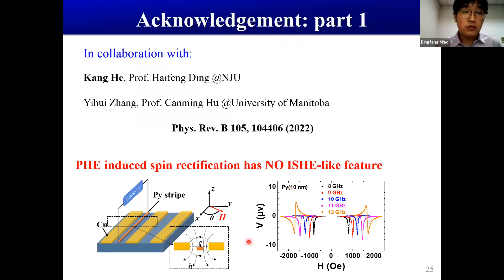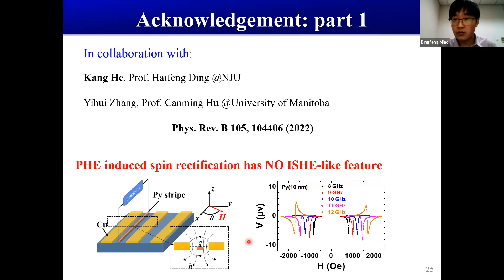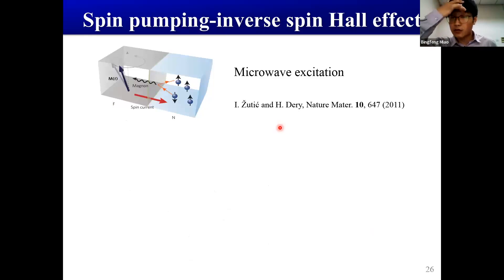To summarize the first part: even for a very narrow stripe, the transverse induction current can have rectification due to the planar Hall effect, and in some cases this planar Hall effect-induced rectification has similar features to the spin current signal. We also identify a geometry where the symmetry of the planar Hall effect-induced rectification is opposite to the inverse spin Hall effect, which helps identify the correct conclusion. This work was mainly performed by my student He Kang, in collaboration with Professor Ding Haifeng at Nanjing University and Dr. Zhang Yihui and Professor Hu Ciming at the University of Manitoba.